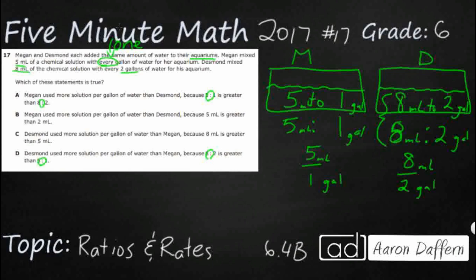So what we're doing is we're looking at which one used more. Either Megan used more or Desmond used more which means we're comparing. So we need to compare these two.